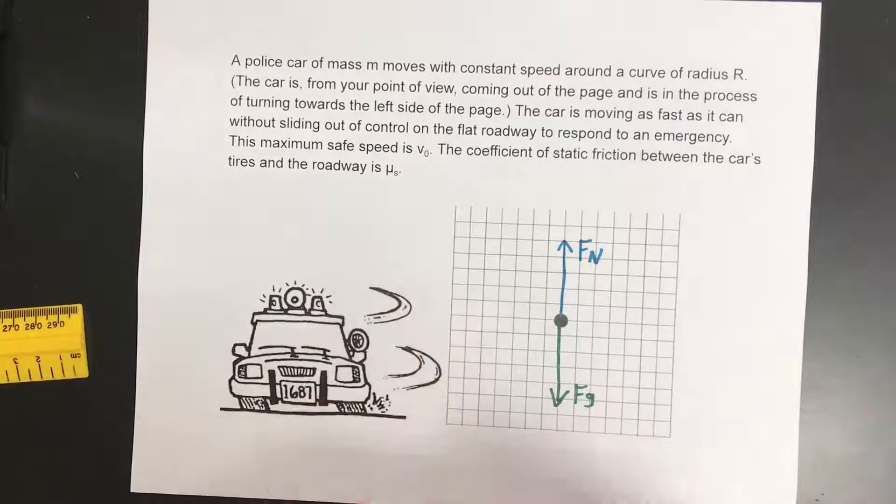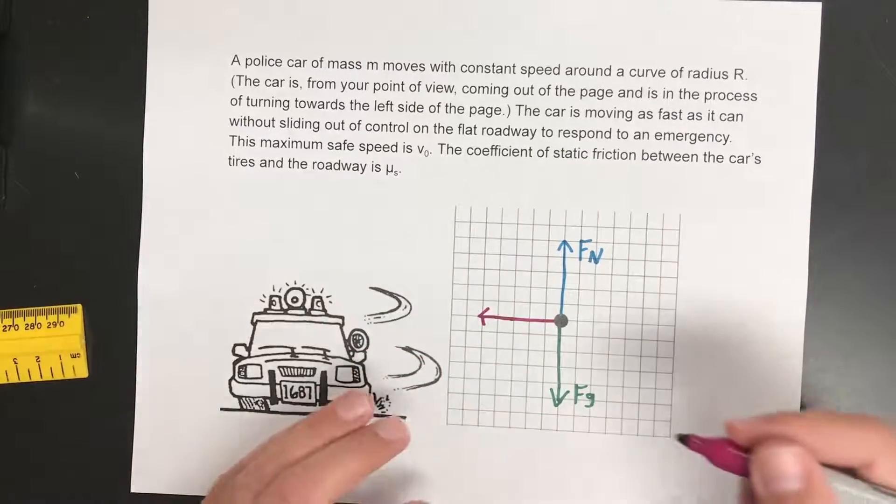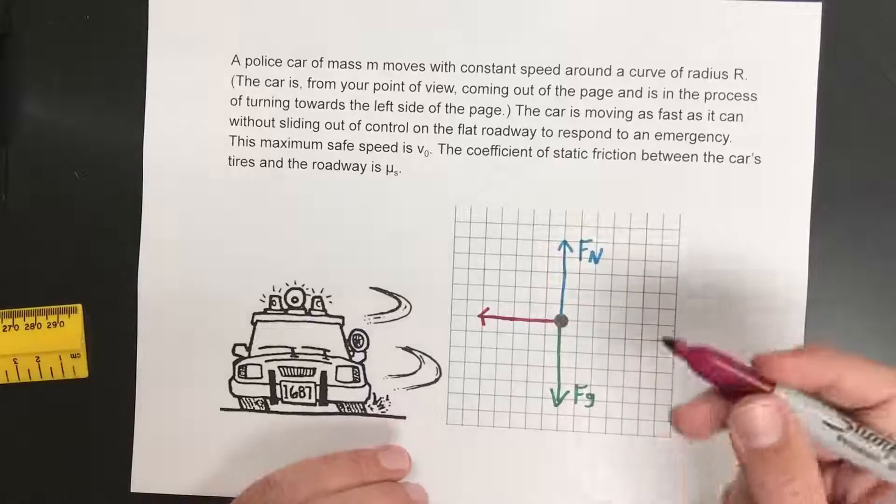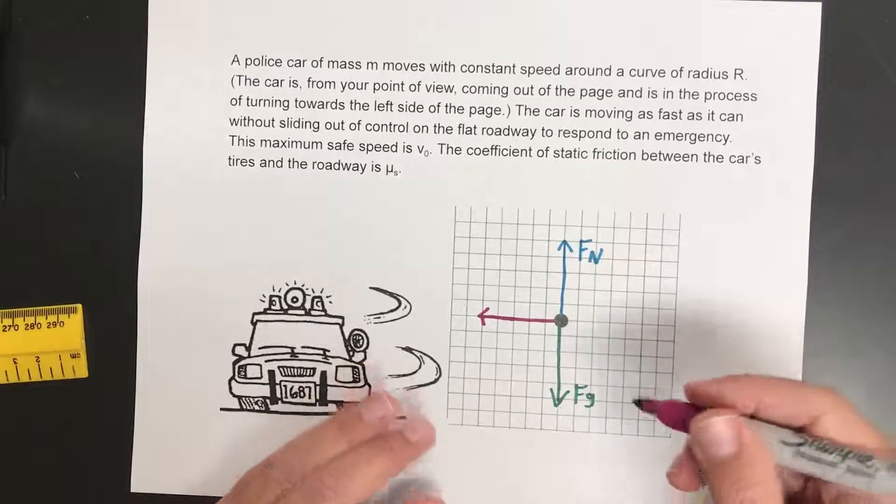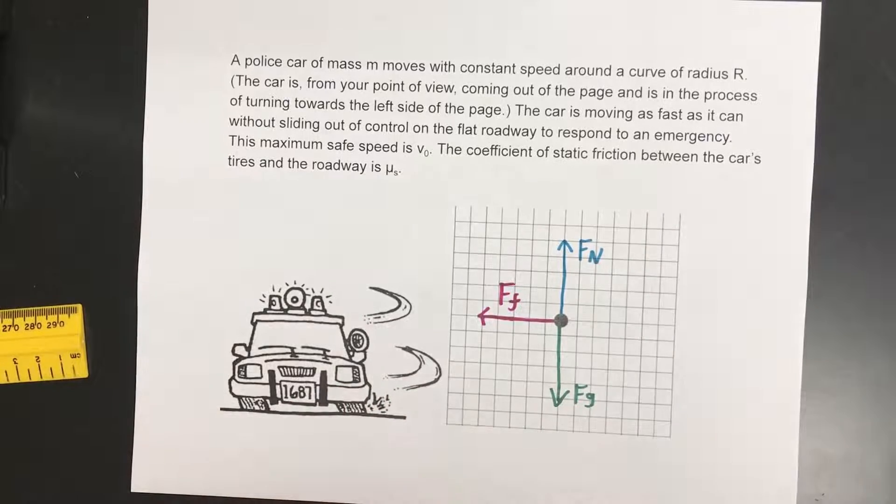So our force has to point towards the center of the circle. Anything going in the circle has a centripetal force towards the center. So what is it? It's the friction of the roadway. So the force of friction. I'll label that.